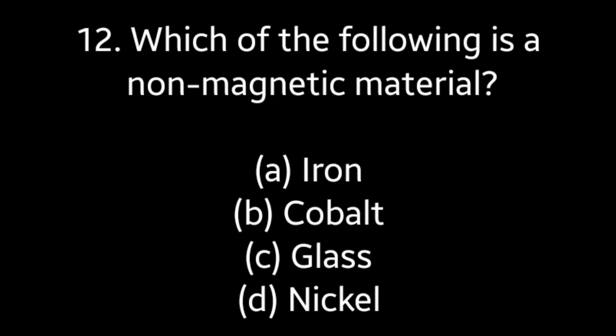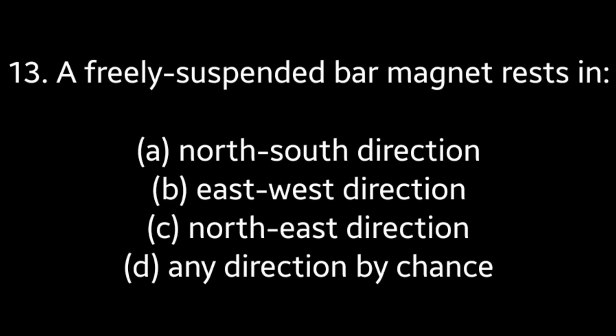Question number twelve: which of the following is a non-magnetic material — iron, cobalt, glass, or nickel? Answer is option C: glass. Question number thirteen: a freely suspended bar magnet rests in — north-south direction, east-west direction, northeast direction, or any direction by chance? Answer is option A: north-south direction.